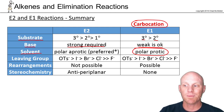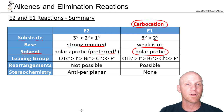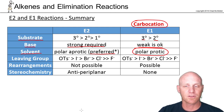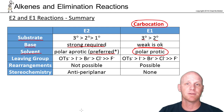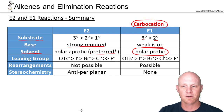For E2, polar aprotic is preferred. Generally, when your base is negatively charged, it'll react faster in a polar aprotic solvent. But E2 reactions happen just fine in polar protic solvents too. Generally a little faster in aprotic with a negatively charged base, but protic or aprotic — it's going to work just fine either way.